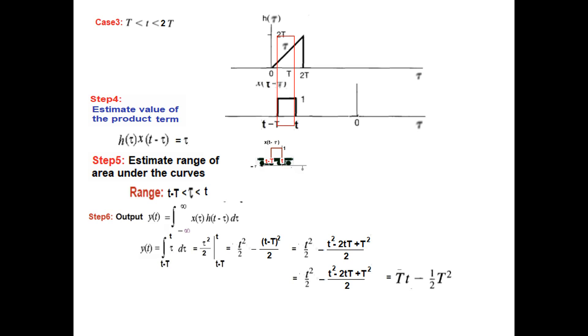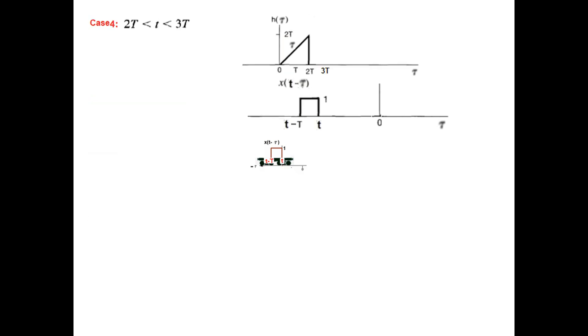Let's pull it further. Now we have pulled it beyond 2 capital T and in between 2 capital T and 3 capital T. So the range is now from 2 capital T to 3 capital T. And this is the overlap. The multiplication remains same, tau multiplied by 1. So multiplication is tau. And now the range of the limit.